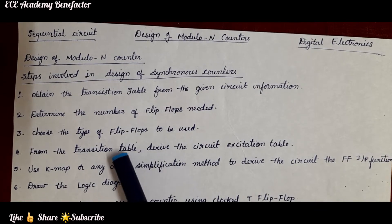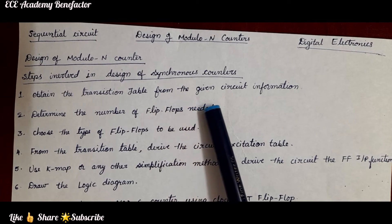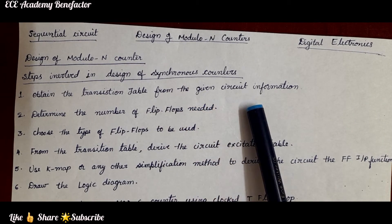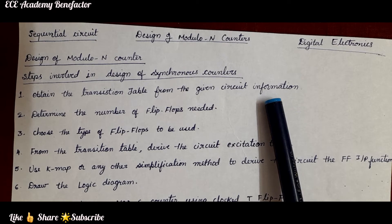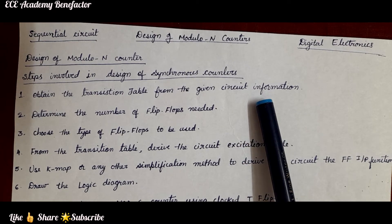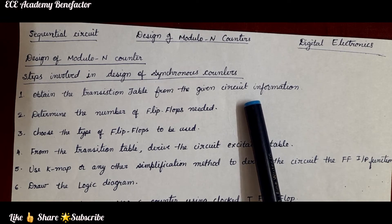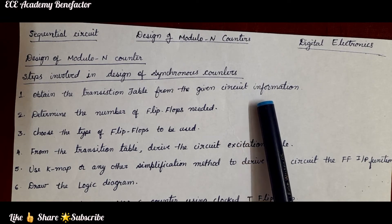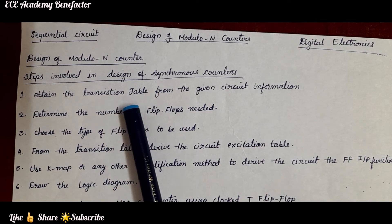The first step is to obtain the transition table from the circuit information. What is the circuit information given? It will be given in state diagram form. Based on the state diagram we need to gather the circuit information and obtain the transition table.